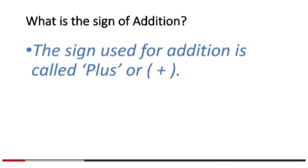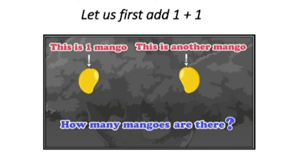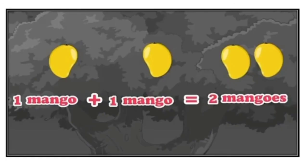Let us first add one plus one. This is one mango and this is another mango. So, how many mangoes are there? Let us count together. One mango plus one mango is equal to two mangoes. So, how many mangoes are there? Two mangoes are there.